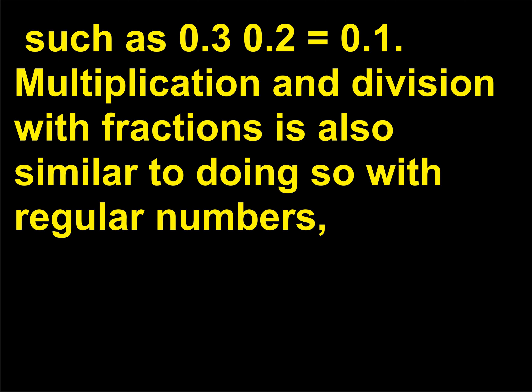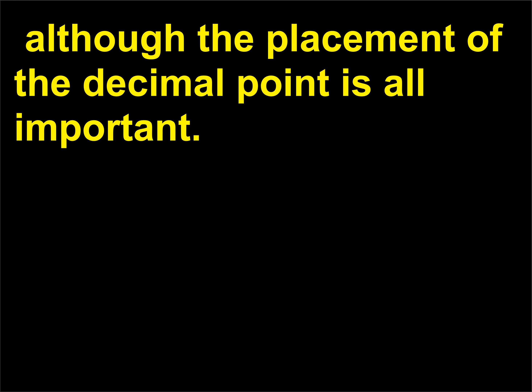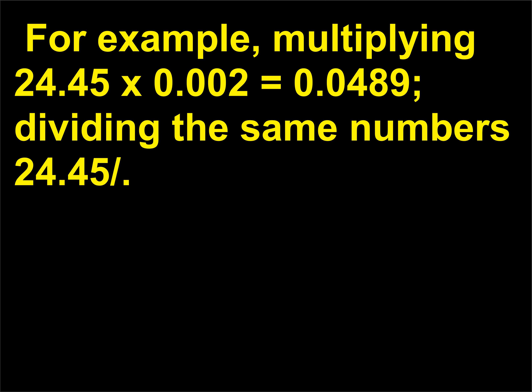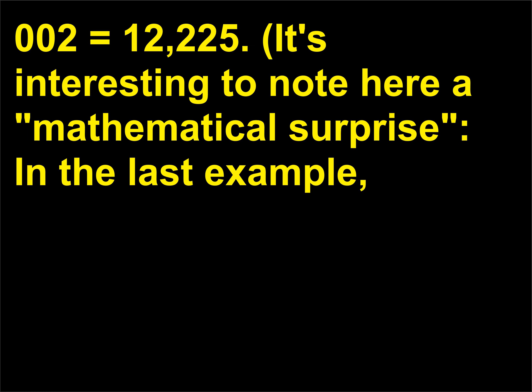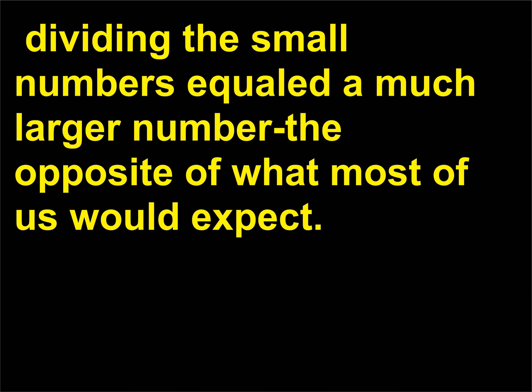Multiplication and division with fractions is also similar to doing so with regular numbers, although the placement of the decimal point is all-important. For example, multiplying 24.45 × 0.002 equals 0.0489. Dividing the same numbers: 24.45 ÷ 0.002 equals 12,225. Dividing by the small number yielded a much larger number — the opposite of what most of us would expect.